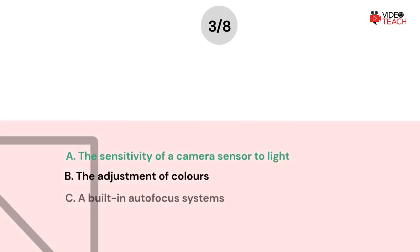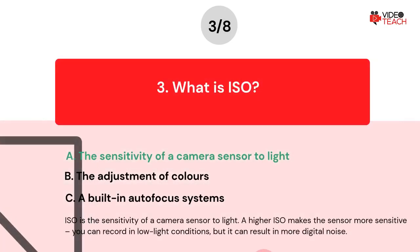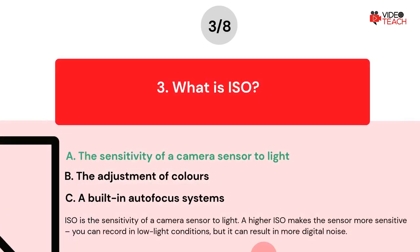The correct answer is A. ISO is the sensitivity of a camera sensor to light. A higher ISO makes the sensor more sensitive. You can record in low light conditions, but it can result in more digital noise.